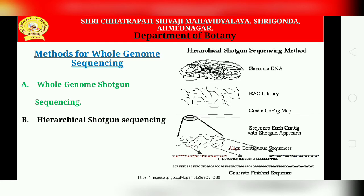By comparison, much less sequencing — four to five fold — is needed in the clone-by-clone or hierarchical shotgun approach. However, in this latter approach, considerable work is involved in preparing the whole genome physical map using BAC and PAC vectors.